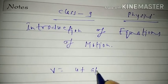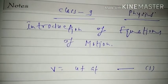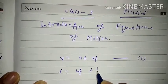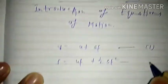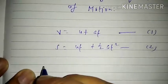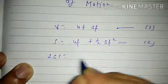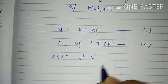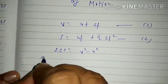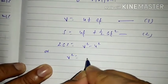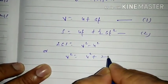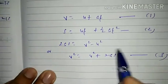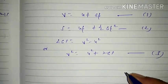First equation: V = U + AT — equation number one. Second: S = UT + ½AT² — equation number two. Third: 2AS = V² − U², or equivalently, V² = U² + 2AS — equation number three.